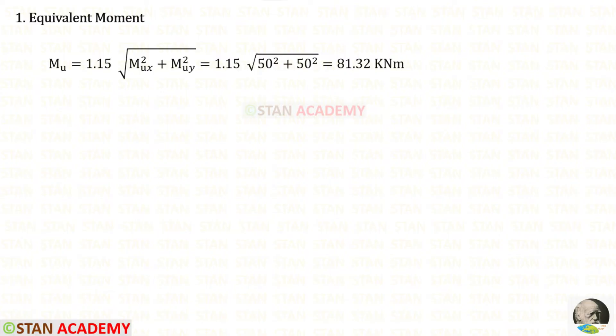Since this column is a square column, we can easily design by finding the equivalent moment. The formula is MU equals 1.15 root of MUX square plus MUY square. We know that MUX and MUY are same, both of them are 50. For MU, we will get 81.32 kilonewton meter.